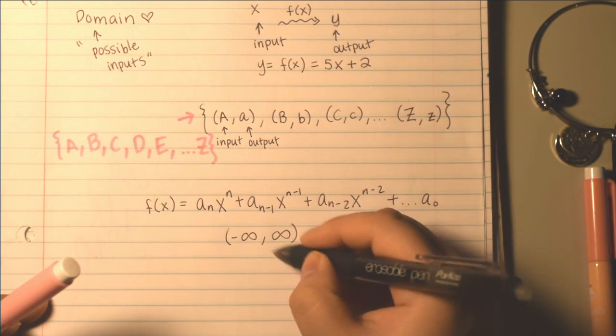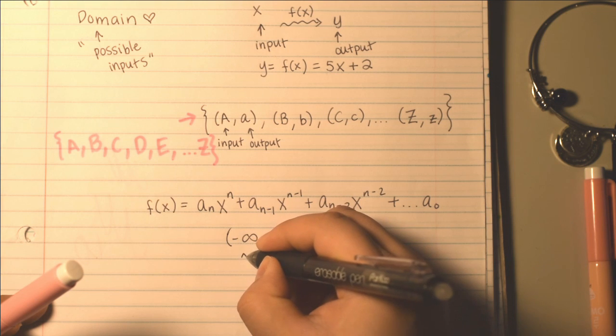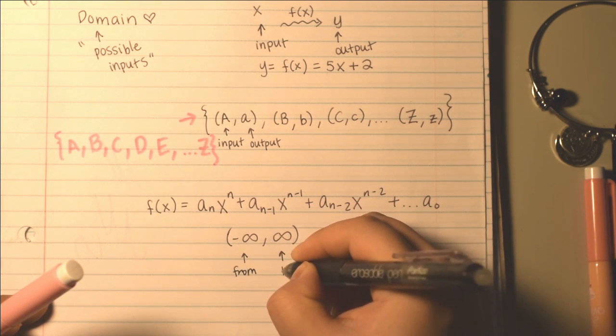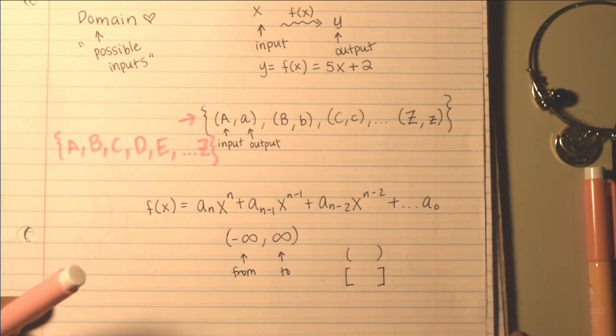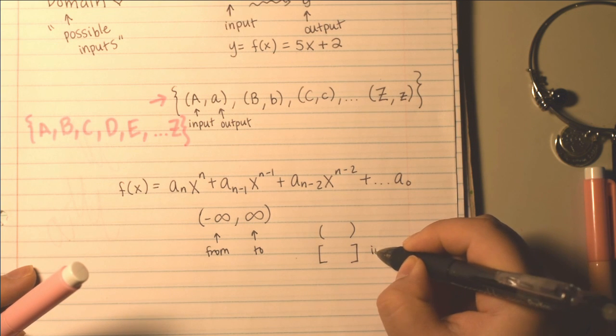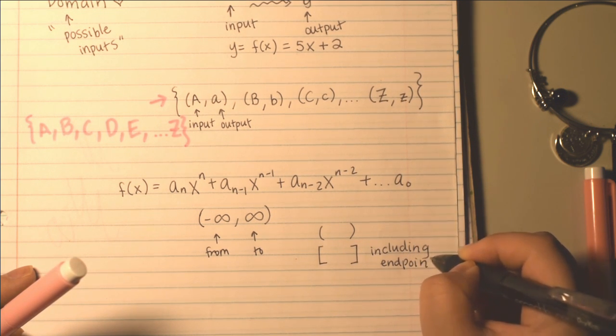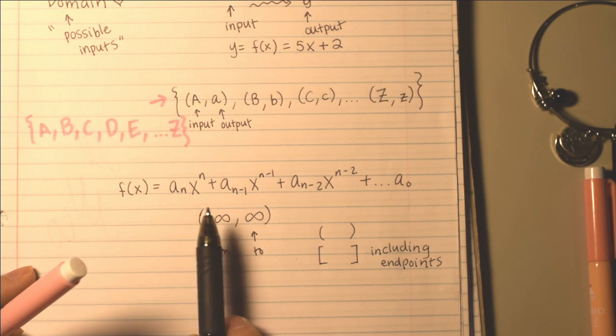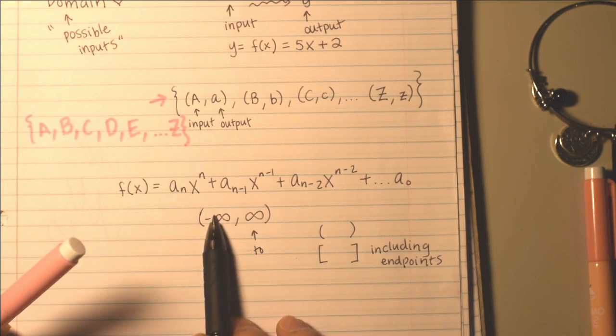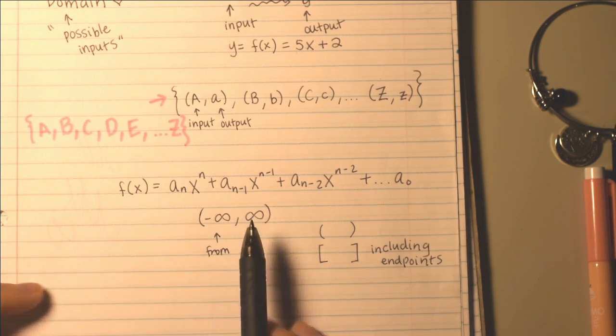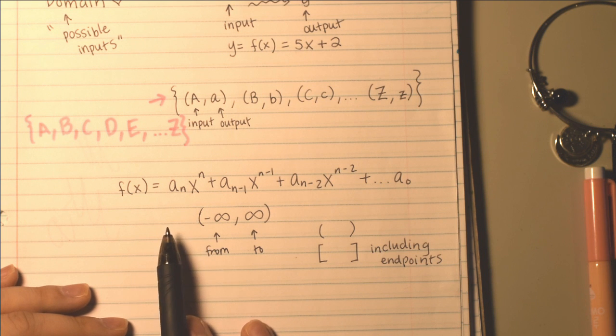Anytime you have stuff with stuff times x to the something, or any combination of those, or maybe they all go away and they're all 0 and just f of x equals 6 or something, that's like a constant function. But whatever the case may be, for all of these, the input, which is the domain or the set of all possible inputs, is just negative infinity to infinity. We like those because you can literally plug in anything. And this is the notation we use. The brackets here are going to be open-ended parentheses because it represents from this to this.